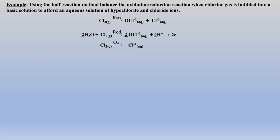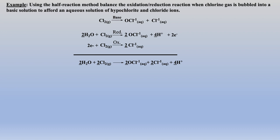We will repeat these steps for the oxidation half-reaction. Chlorine is oxidized and needs to be balanced. Since there is no oxygen, we do not add any water molecules or protons to balance it. This means we add 2 electrons to the reactants side. Before combining the half-reactions, we need to ensure that the electrons will cancel. In this example they do, so we can add the 2 half-reactions directly.